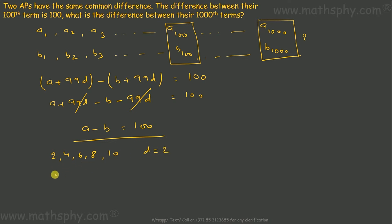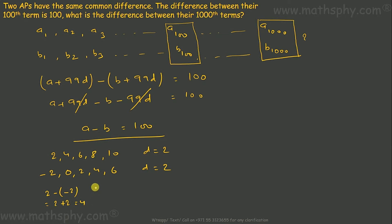Here the common difference is 2. Let's write one more series: minus 2, 0, 2, 4, 6. Here the common difference is also 2 — same as in this question. You can see: difference between the first terms is 2 minus (minus 2) = 4. Difference between the second terms: 4 minus 0 = 4. Difference between the third terms: 6 minus 2 = 4. Difference between the fourth terms: 8 minus 4 = 4.